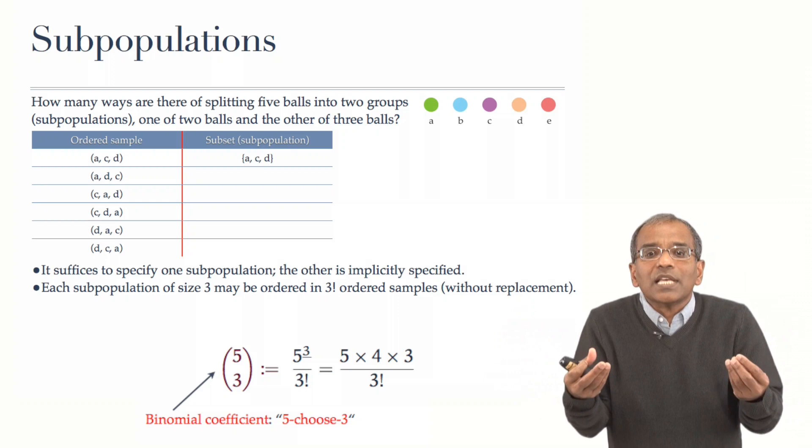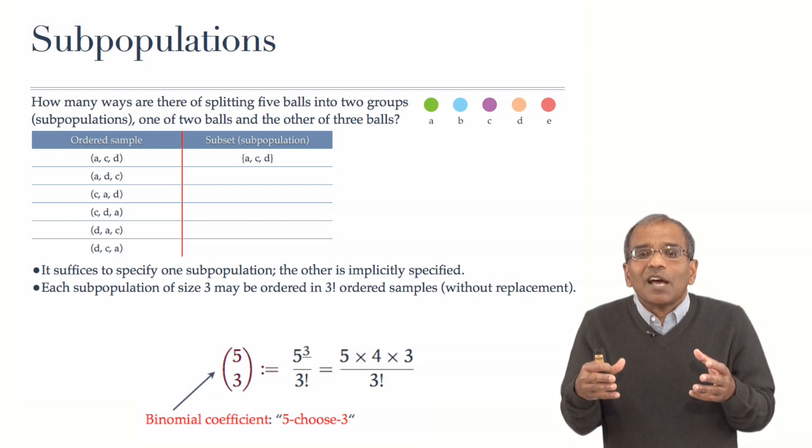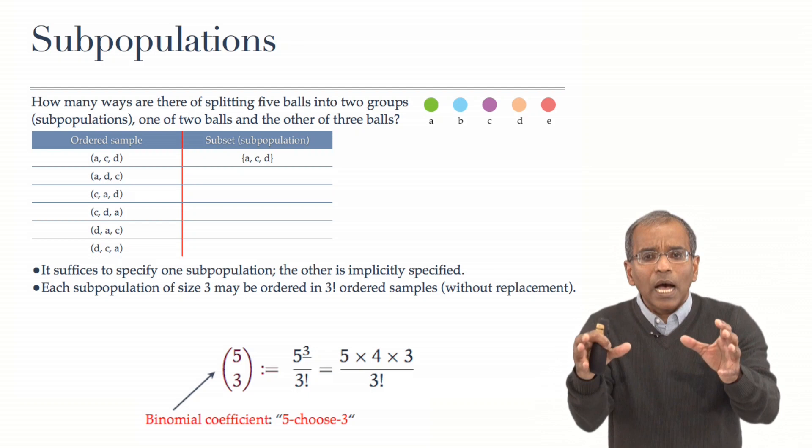There are five objects in the population, and we are selecting three. Five choose three. This is a famous historical object. In fact, this particular object was at the heart of Isaac Newton's discovery of the calculus, but more on that later.